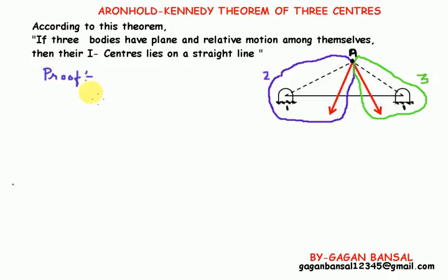We know that the number of i-centers in a kinematic chain is nC2, where n represents the number of links. That is n into n minus 1 upon 2, which equals 3 into 3 minus 1 upon 2.